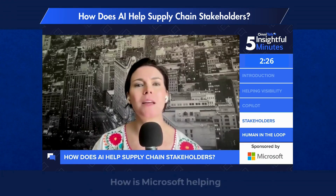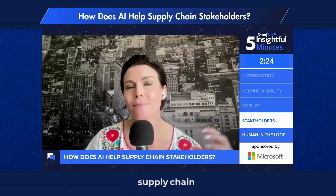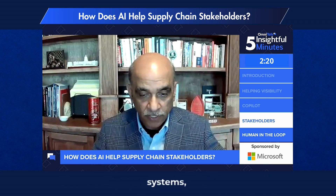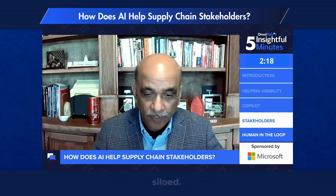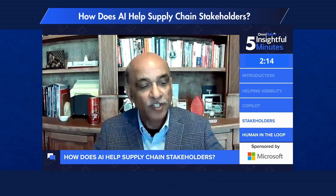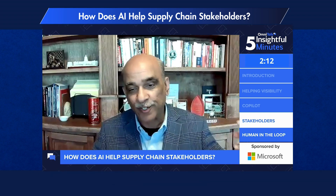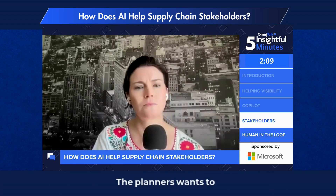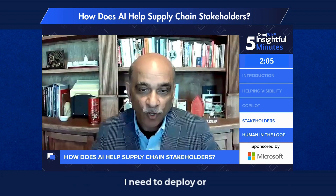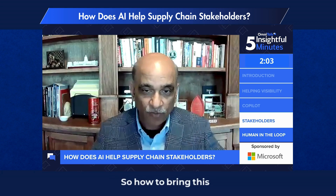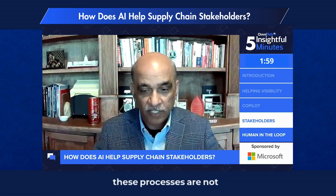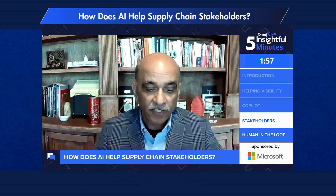How is Microsoft helping connect the supply chain stakeholders? Data resides in multiple systems and they are often siloed. Enterprise systems want to execute — where is my order? Where is my shipment? Where's my truck? The planners want to know where and how much they need to deploy or ship. So how to bring this data together if these processes are not working in synchronization.